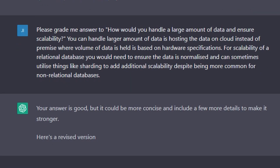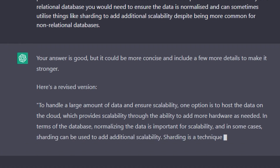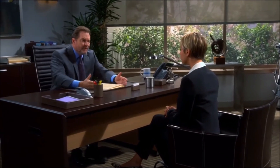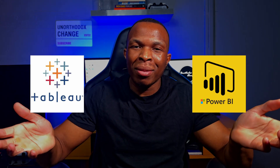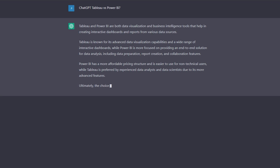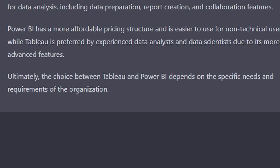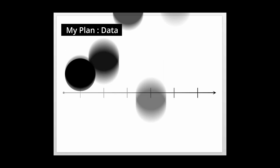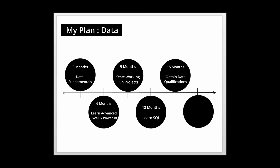Once you come up with an answer you really like, you can push it back to ChatGPT and it will provide a grade and feedback. I did this with a question about handling large amounts of data and ensuring scalability. I gave an answer around moving away from on-premise storage to cloud storage, ensuring the database was thoroughly normalized, and introducing sharding. It liked my answer, but also noted improvements — it said my answer could be more concise and gave me a model answer to read through. This means you end up with an answer you can actually use going forward in interviews. ChatGPT can also be used as a comparison tool.